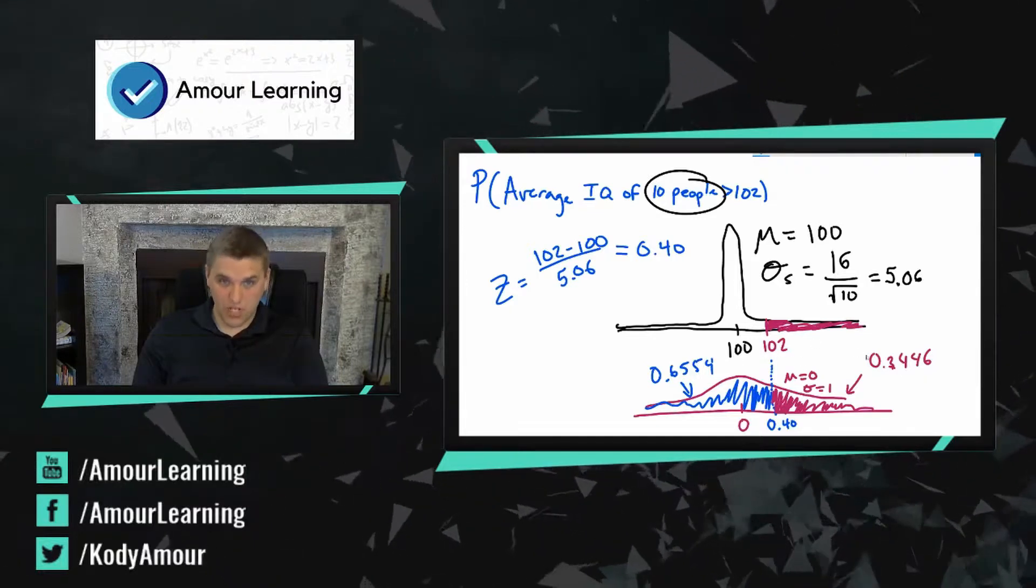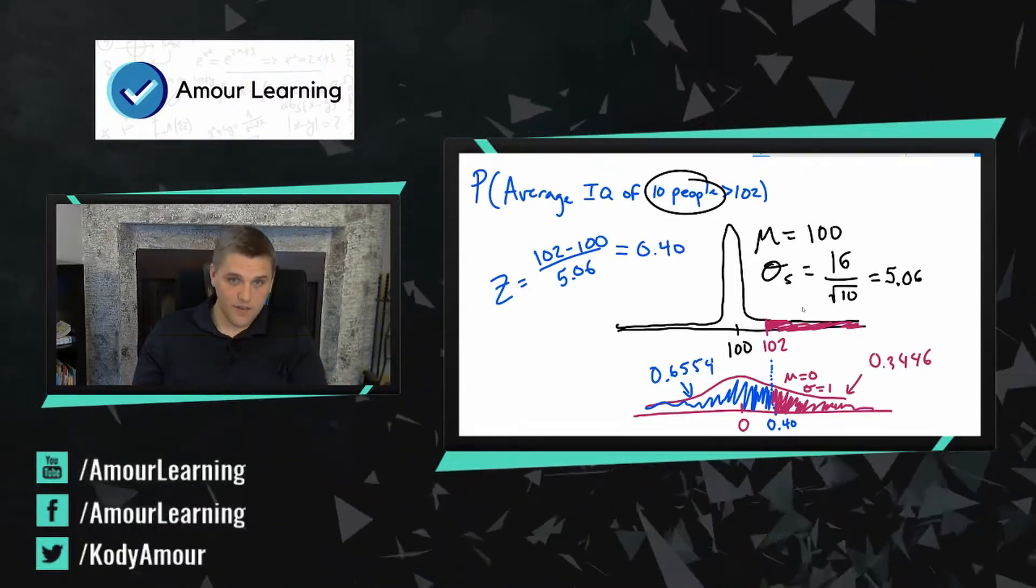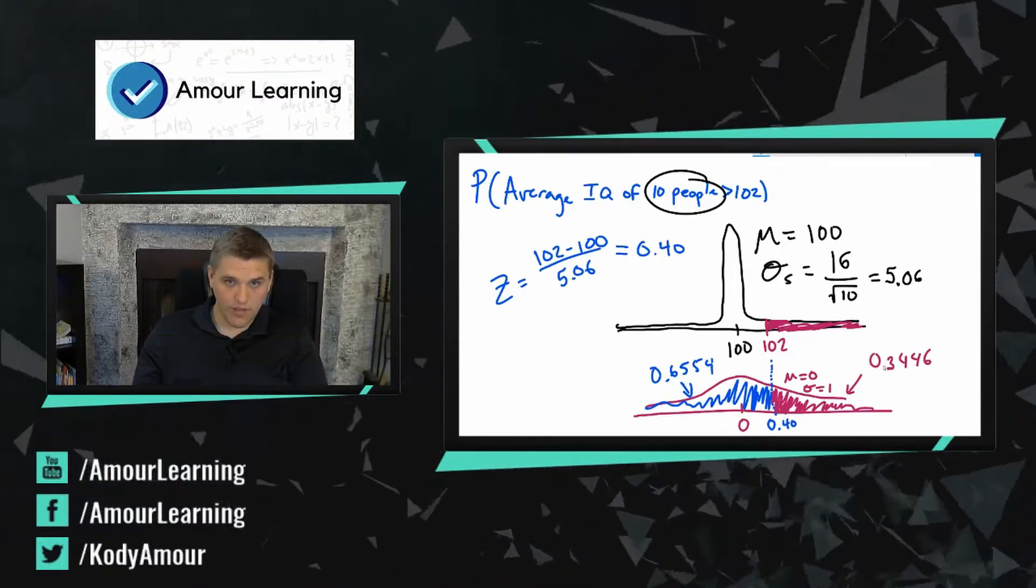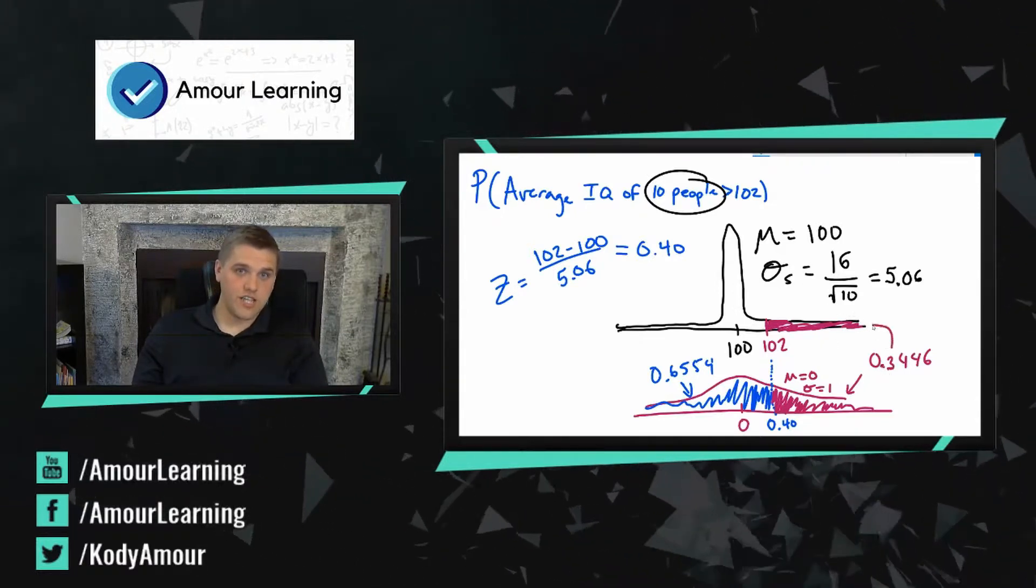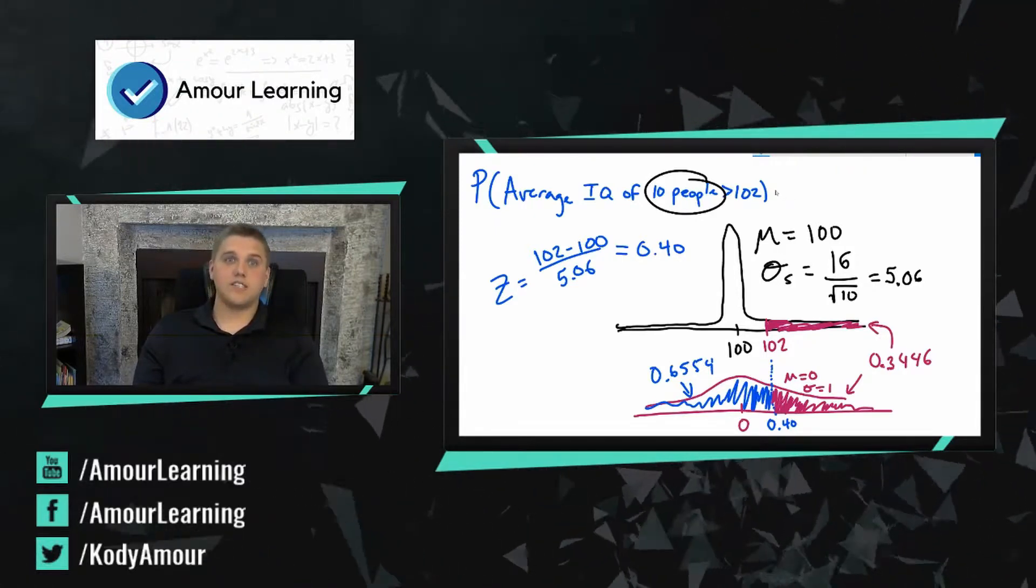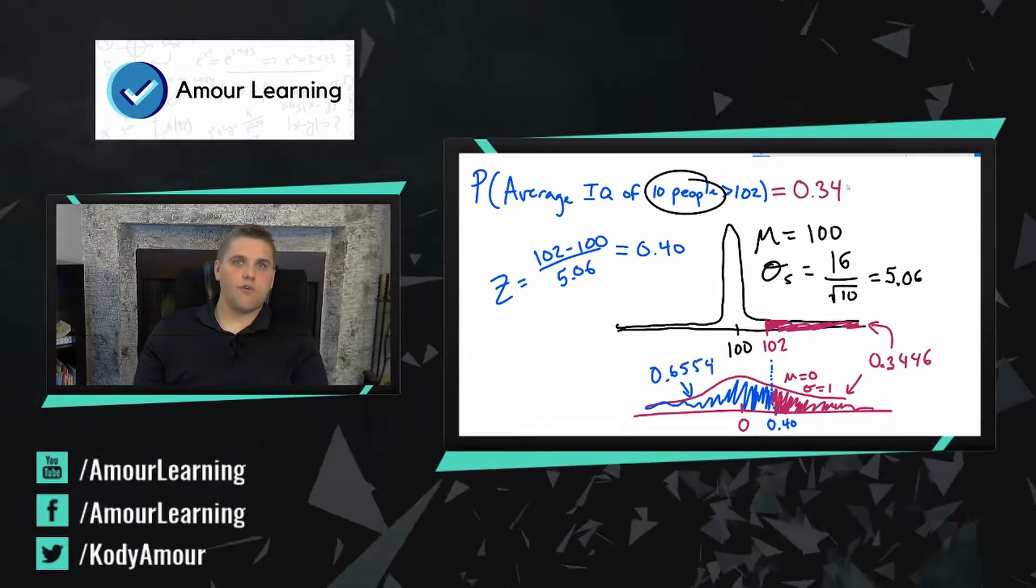So if you add up the blue region plus the purple region you'll get the number one, and you can test that if you'd like. All right, so if that area is 0.3446, then this area is 0.3446, which means that this is 0.3446.